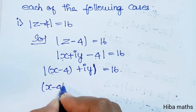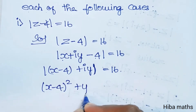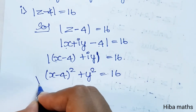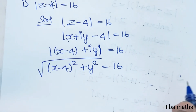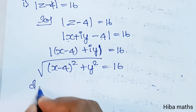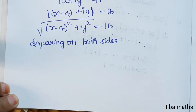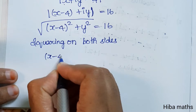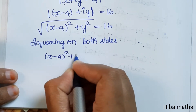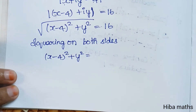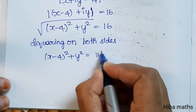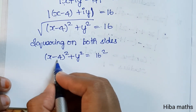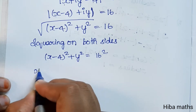Taking the modulus: the square root of (x - 4)² + y² equals 16. Now we square both sides to remove the square root, giving (x - 4)² + y² = 16².